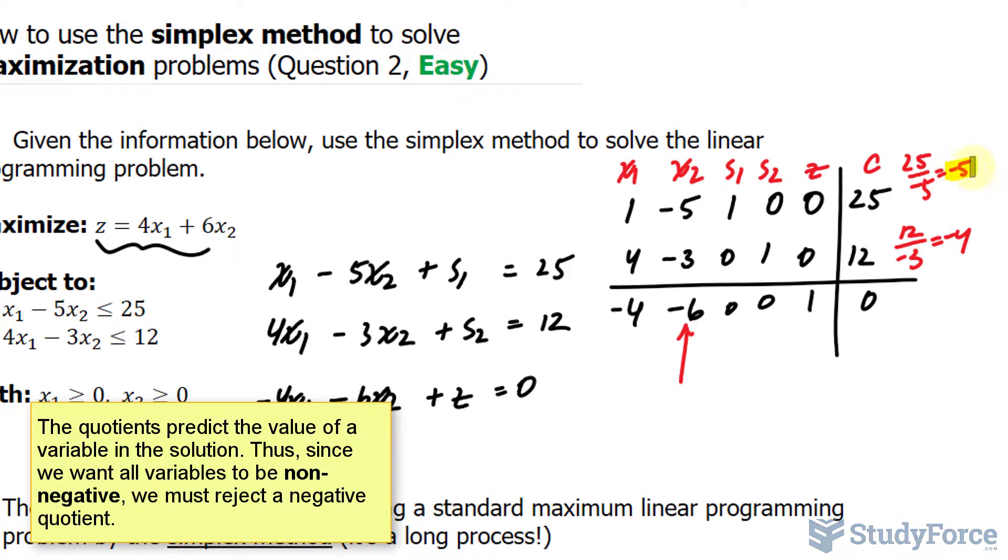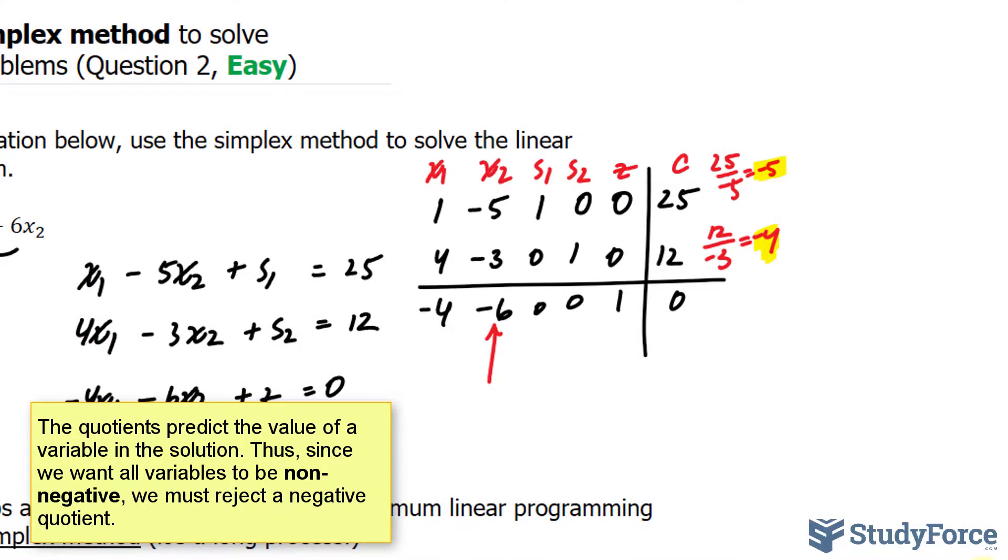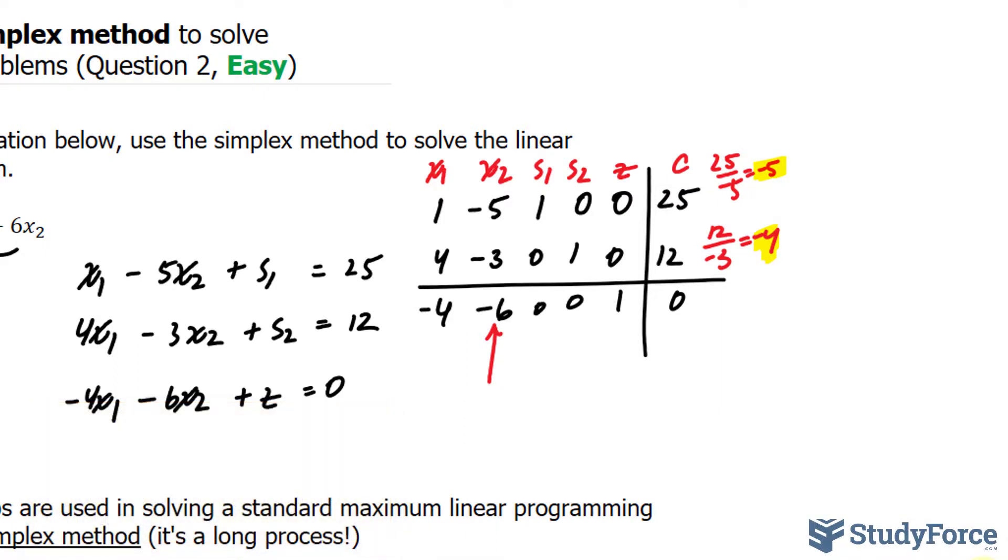Now, because both of these numbers are negative, that's a problem. Because what that tells us is that there is no unique optimal solution that will be found. Such a situation indicates an unbounded feasible region.